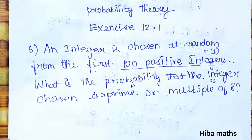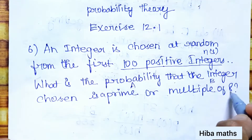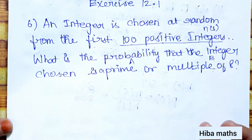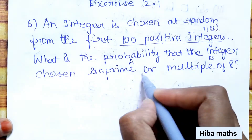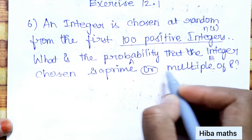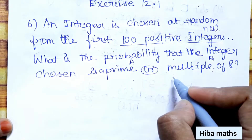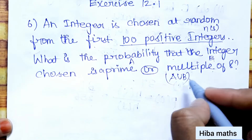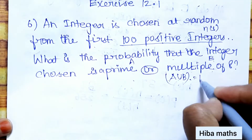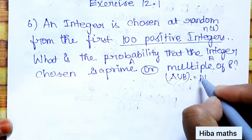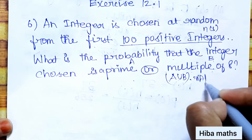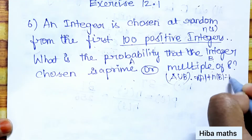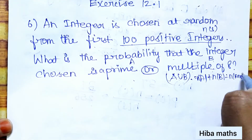Let A be the event of getting a prime number and B be the event of getting a multiple of 8. We need to find P(A or B), which equals n(A∪B) divided by n(S). The formula for n(A∪B) is: n(A) plus n(B) minus n(A∩B).